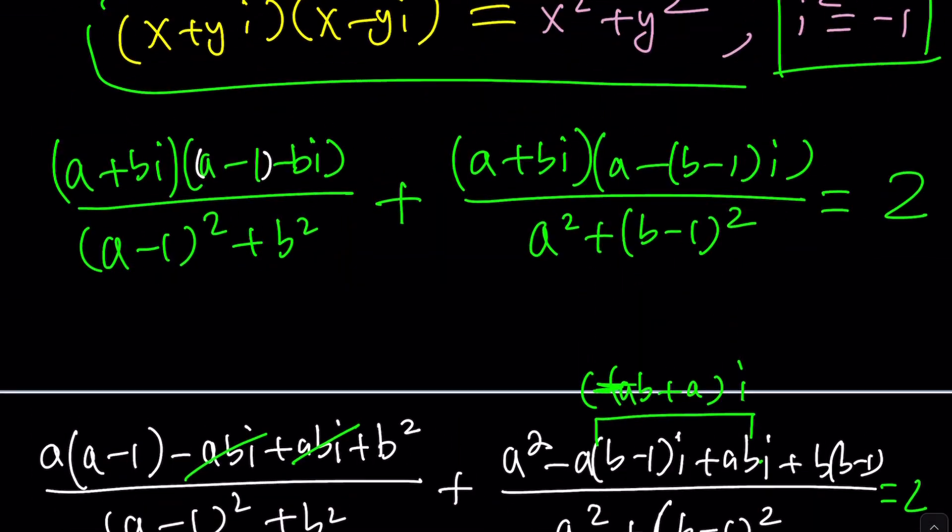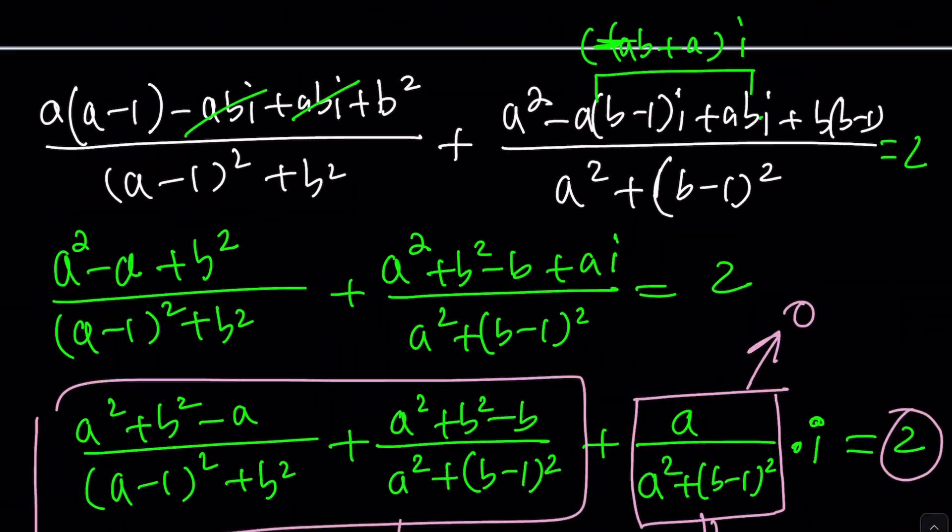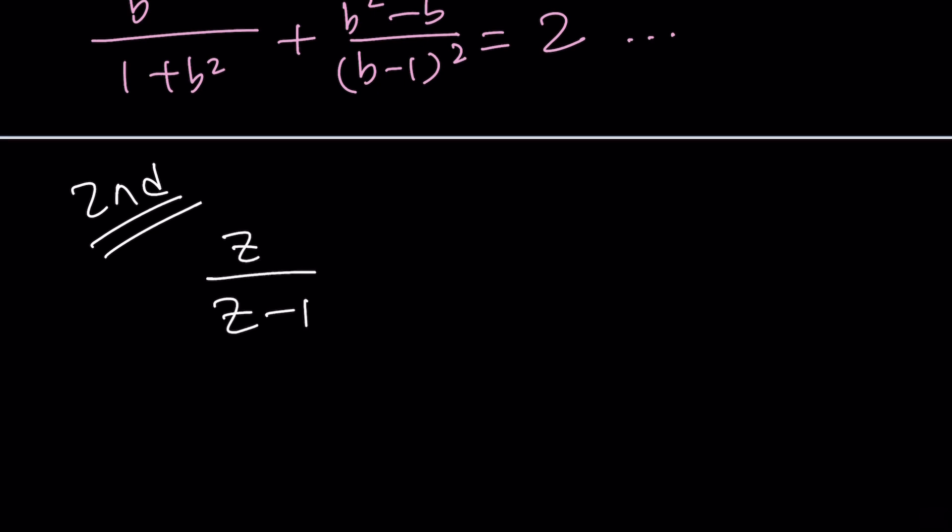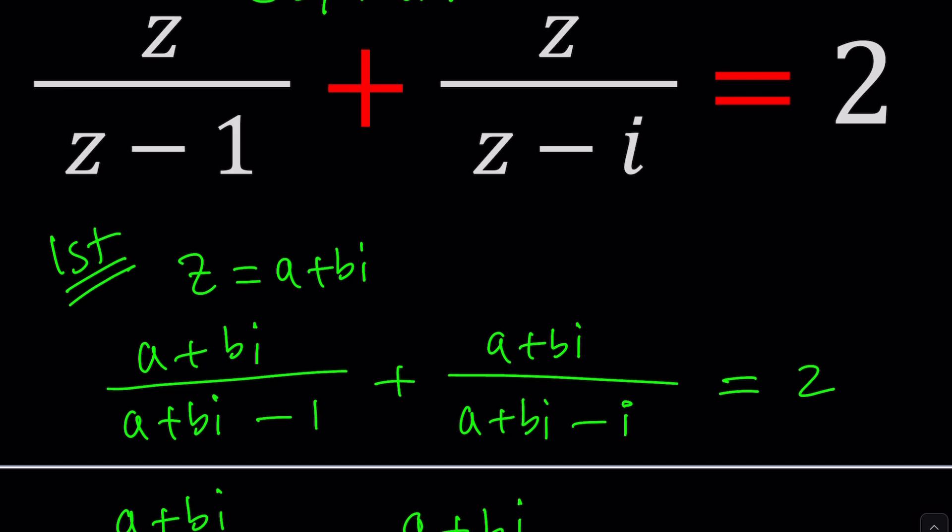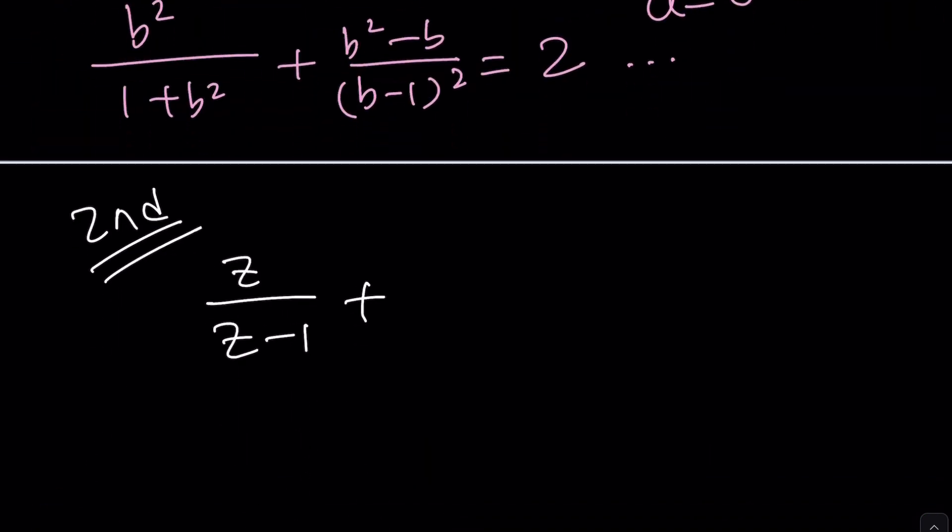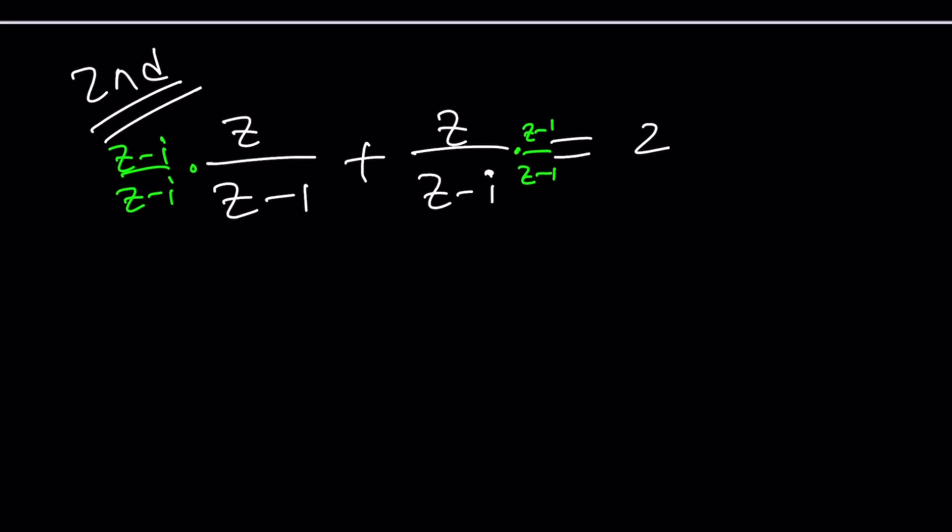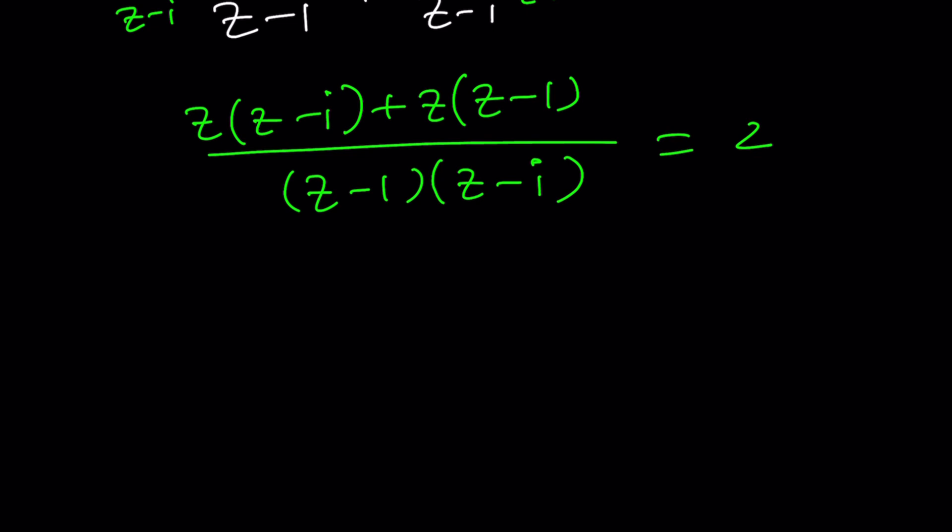So, what was the question? Z over Z minus 1 plus Z over Z minus I is equal to 2. So, the question is, could we just make a common denominator? In this form, yes. So, let's multiply this one by Z minus I over Z minus I. And multiply this by Z minus 1 over Z minus 1. That's going to give you in the numerator Z times Z minus I. And now you can add because you have a common denominator. Which is really nice. And that is Z minus 1 times Z minus I. And that's equal to 2. So, that should give you a quadratic, which is very easy to solve. Kind of.